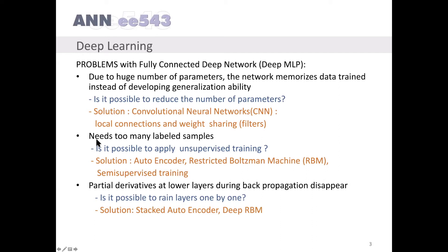To overcome the memorization problem, the network needs too many labeled samples. The question is: is it possible to apply unsupervised training? The solution is autoencoder and restricted Boltzmann machine, RBM. There are also approaches called semi-supervised training, which make it possible to train with a small number of samples. And then comes unsupervised self-learning.